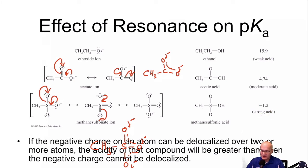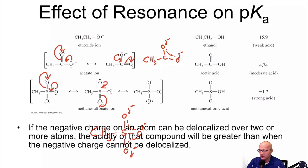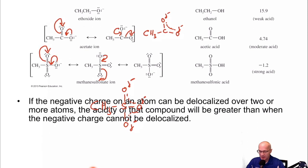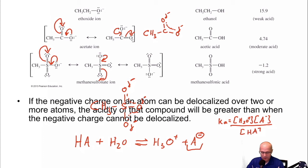You have to understand that in acid-base chemistry, you have HA plus water in equilibrium with hydronium plus A minus. The stability of A minus tells us how acidic HA is going to be.